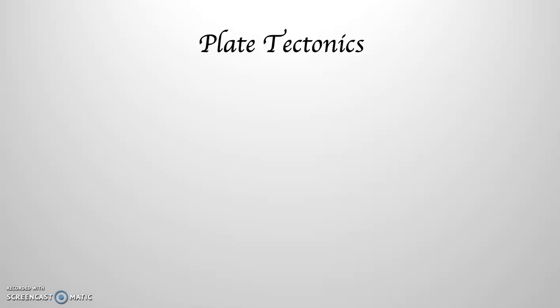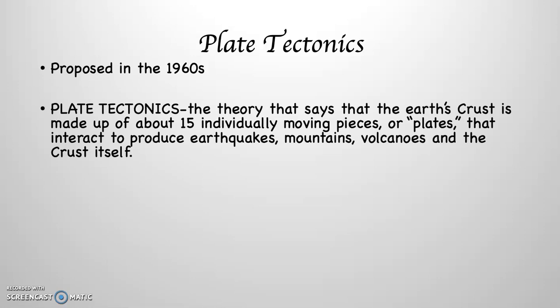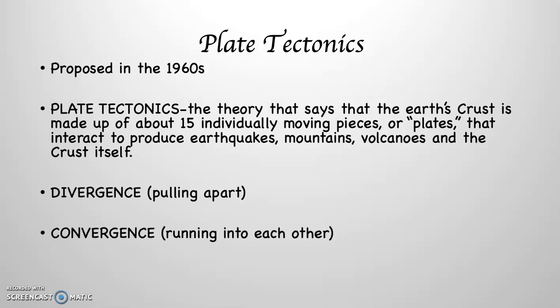The concept that we use to describe what has happened is called plate tectonics. This was proposed in the 1960s, and plate tectonics is the theory that says that the Earth's crust is made up of about 15 individually moving pieces, or plates, that interact in various ways to produce earthquakes, mountains, volcanoes, and the crust itself. There are three movements with plate tectonics: divergence, which means the plates pull apart; convergence, which means they run into each other; and transform movement, which means they move side-by-side or laterally.